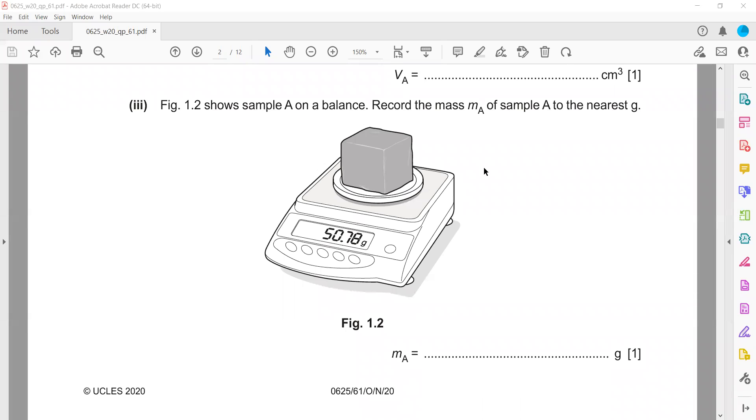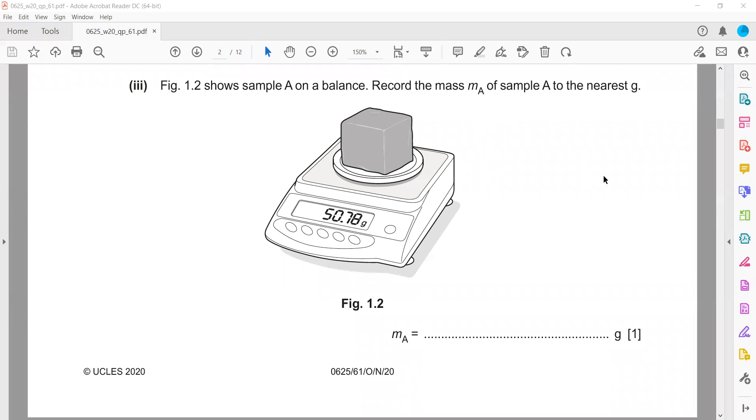Figure 1.1 shows sample A on a balance. Record the mass to the nearest gram. It is 50.78 g, so we round to a whole number: 50.78 g to the nearest gram is 51 grams.